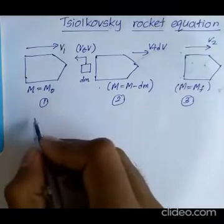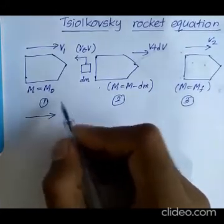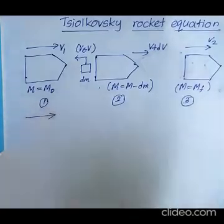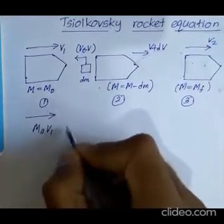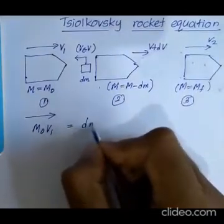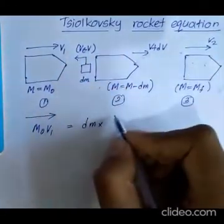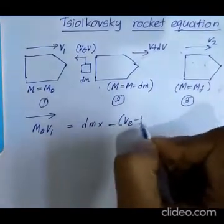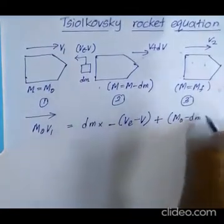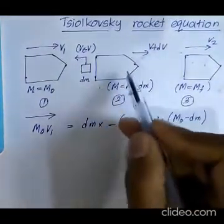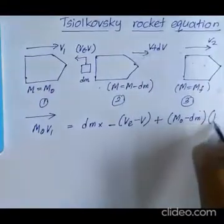I am writing the equation of conservation of linear momentum. As momentum is a vector quantity, I am choosing a direction which is my right side. So M0 V1 equals dm multiplied by, as the propellant's velocity is opposite to the right side I am applying negative sign, Ve minus V, plus M0 minus dm, which is the mass at the second instance, times the velocity of the rocket itself V plus dV.